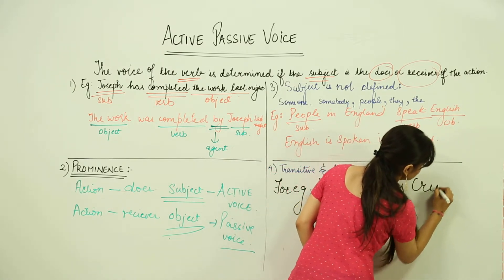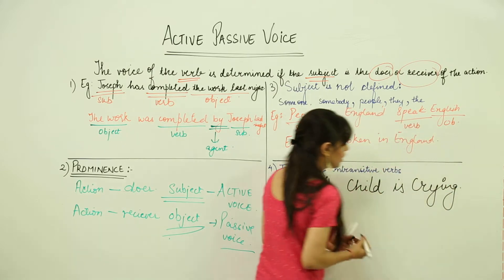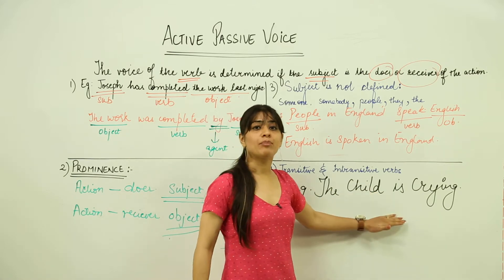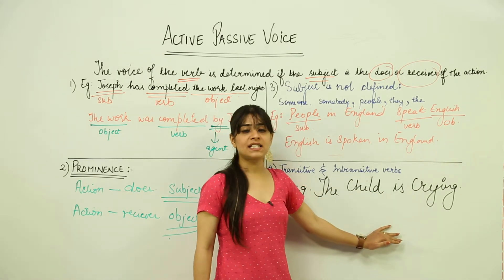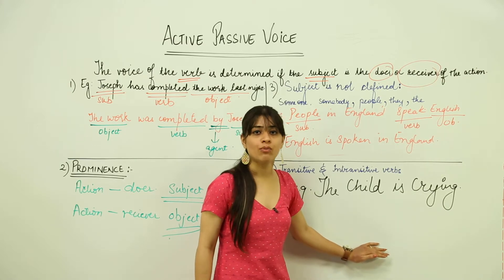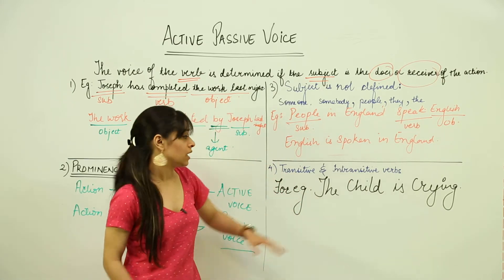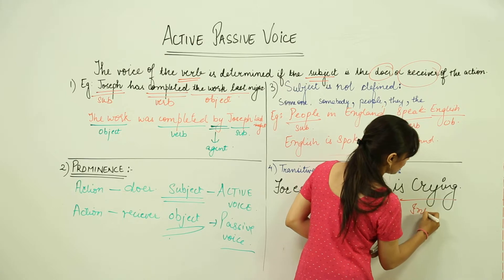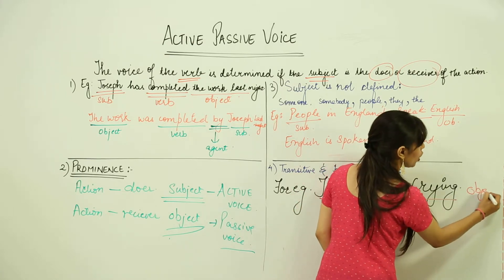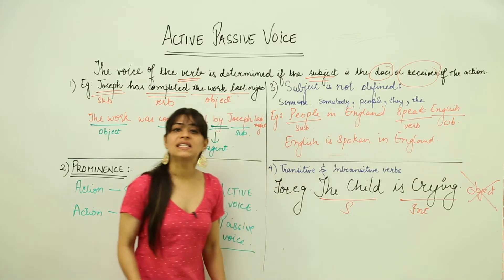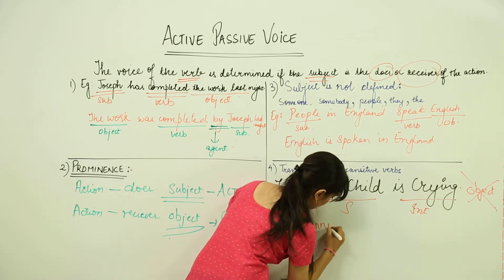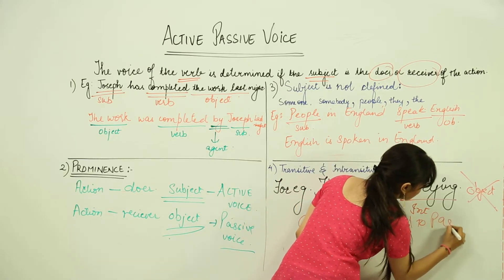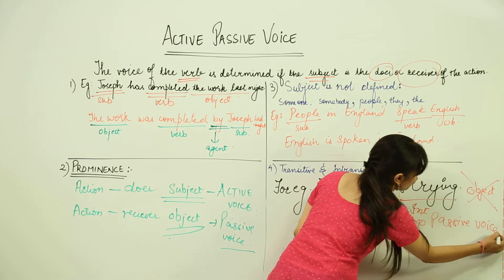The child is crying. This is an example of an intransitive verb. This is an active sentence, but it cannot be converted into passive voice. The reason is that it has no object. The child is the subject, is crying is an intransitive verb. Since we do not have an object, this cannot be changed to passive voice.